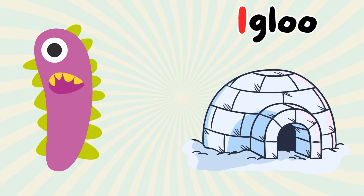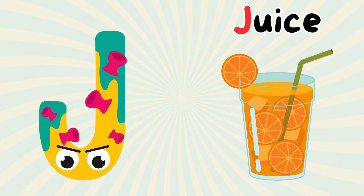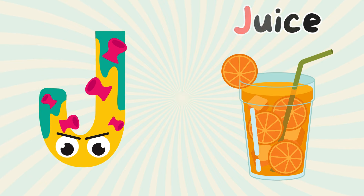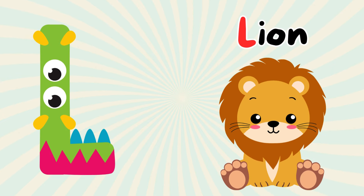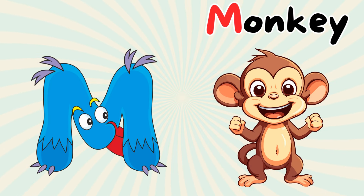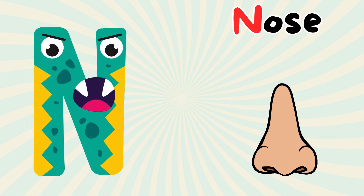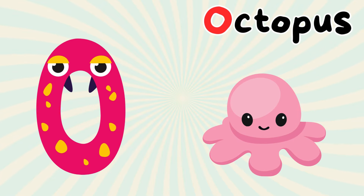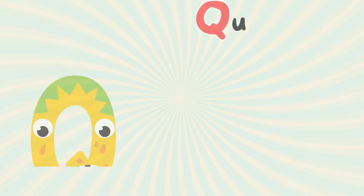I for igloo. J for juice. K for kangaroo. L for lion. M for monkey. N for nose. O for octopus. P for pig. Q for question.